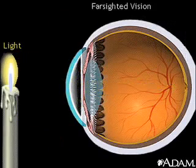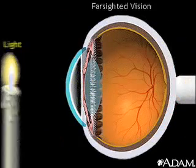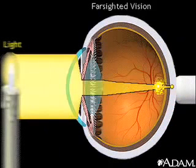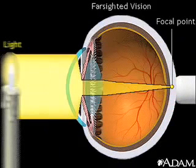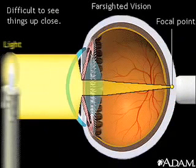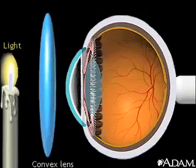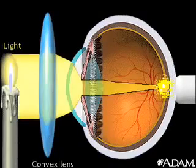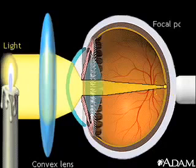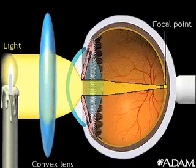Farsightedness occurs when the length of the eye is too short. Light is focused at a point behind the retina, making it difficult to see things that are up close. A convex lens is used to correct farsightedness because it directs the focal point back onto the retina.